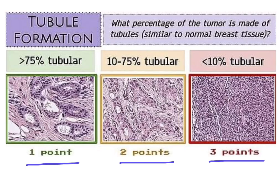This is the pictorial representation of tubule formation. Depending upon the percentage of the tumor which is made up of tubules: if more than 75% tubular formation is noted, the score is one point; 10 to 75% tubular formation is two points; and less than 10% tubular formation is three points.